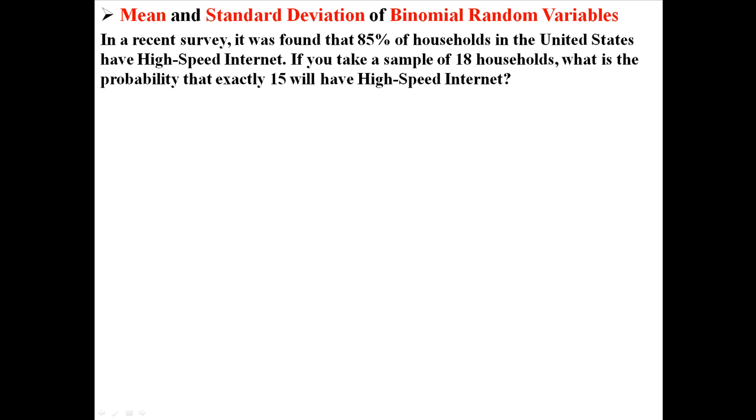So back to calculating the mean and standard deviation of binomial random variables. I'm going to give you this example I had before which says, in a recent survey it was found that 85% of households in the United States have high-speed internet. If you take a sample of 18 households, what is the probability that exactly 15 of those households will have high-speed internet?